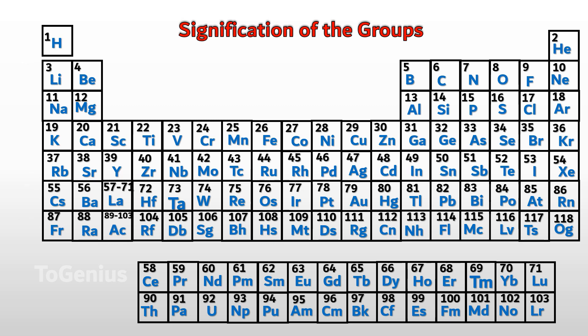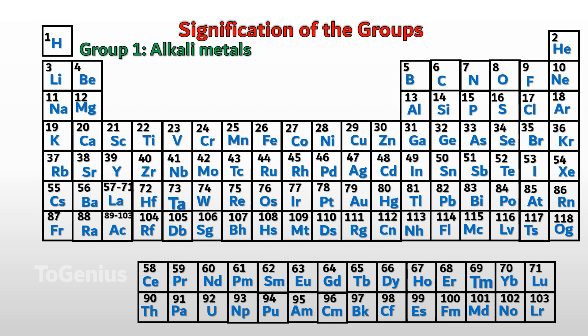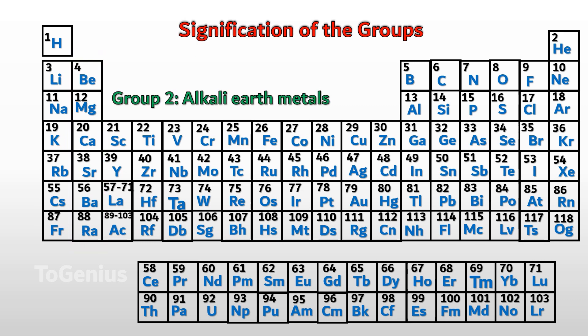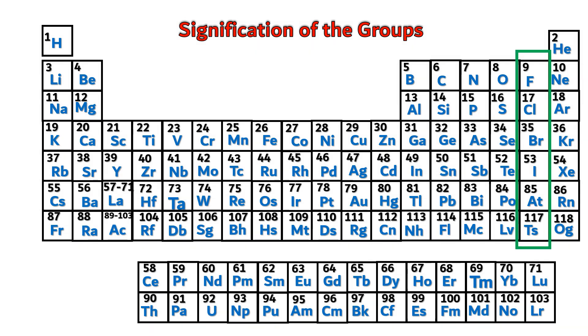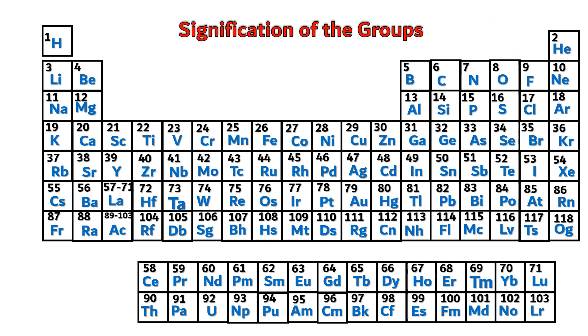Next, significance of groups. Elements having similar chemical properties are grouped together. Group 1, except hydrogen, are all metals called alkali metals. They have similar chemical properties and the same valency. Group 2 metals are called alkaline earth metals — they have the same chemical properties and same valency. Group 17 non-metals have the same chemical properties and same valency.